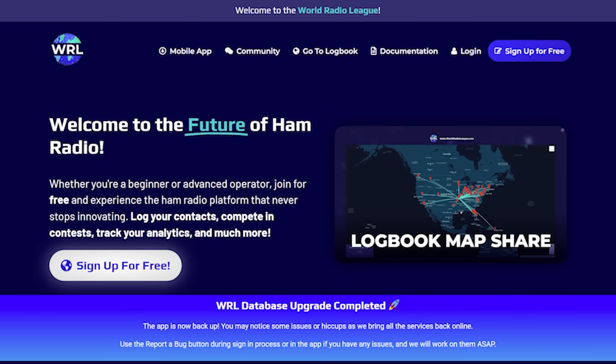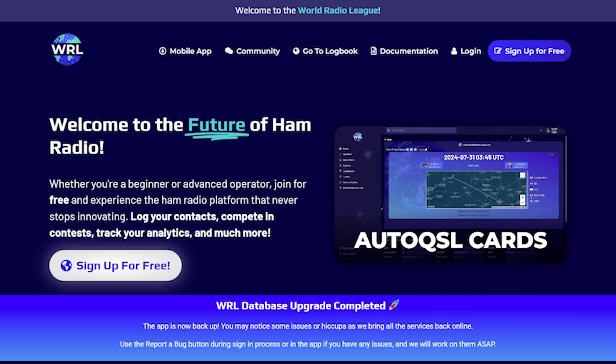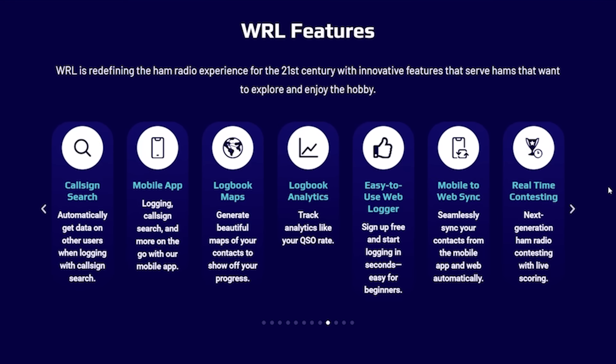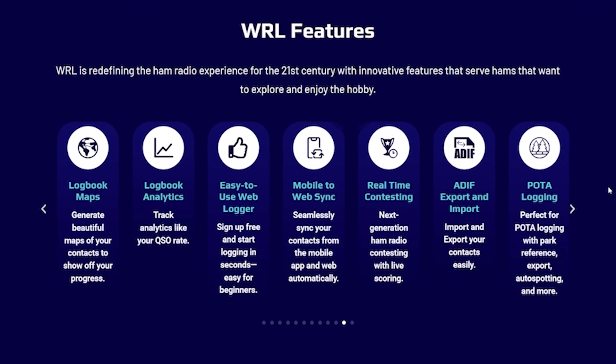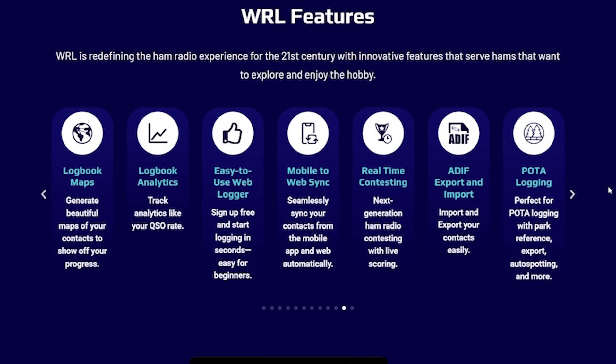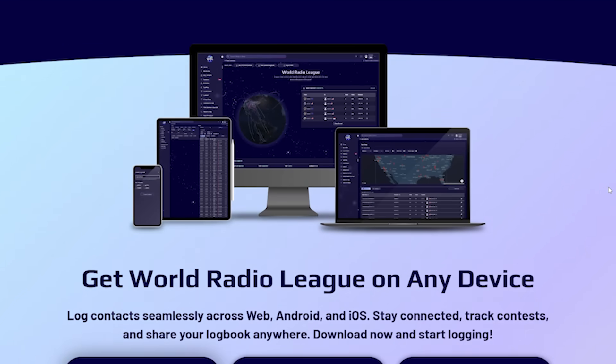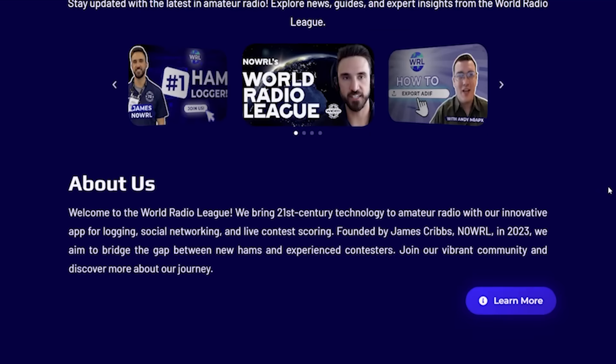Now in addition to that, the guys behind HAM Radio Prep also have the WRL or the World Radio League. This is an intuitive logging and logbook software. You can use this for POTA, you could use this as your main logging software. It is modern, it is intuitive, and it's got a ton of features. Now you can sign up as a free member if you want or you can sign up on a paid plan which offers you quite a number of upgrades and also features. So if you want to do that, then there is a link below in the description to check it out.